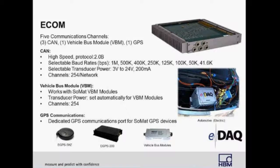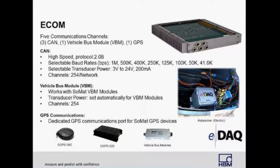The eCom layer is a five-port communication layer with three CAN ports, one vehicle bus port, and one GPS port. The CAN port, which is protocol 2B, has selectable baud rates from 41.6 kilobits per second to one megabit per second. It has the ability to power CAN-based transducers such as the SOMAT-CR with 3 to 24 volts, and you can log up to 254 CAN messages per port. Logging CAN messages has become very popular, as it allows you to log messages that once required installing physical transducers like speed or brake sensors, saving time, money, and freeing up analog channels.